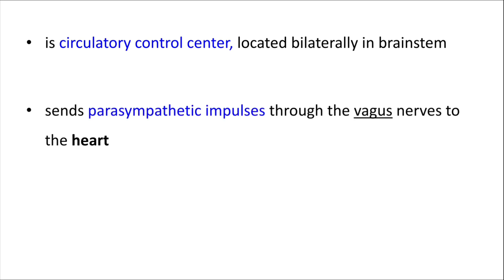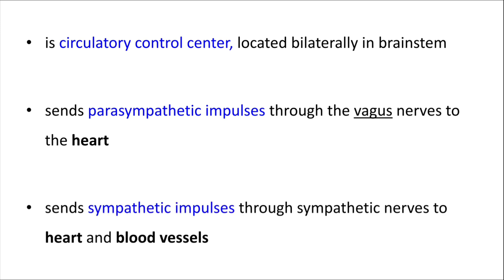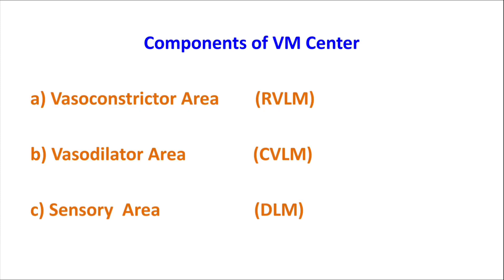A vasomotor center is a cardiovascular control center and it is located bilaterally in the brainstem. This center controls the cardiovascular system through the autonomic nervous system. For this purpose, the vasomotor center sends parasympathetic impulses through the vagus nerve to the heart, and it sends sympathetic impulses through various sympathetic nerves to the heart and blood vessels.